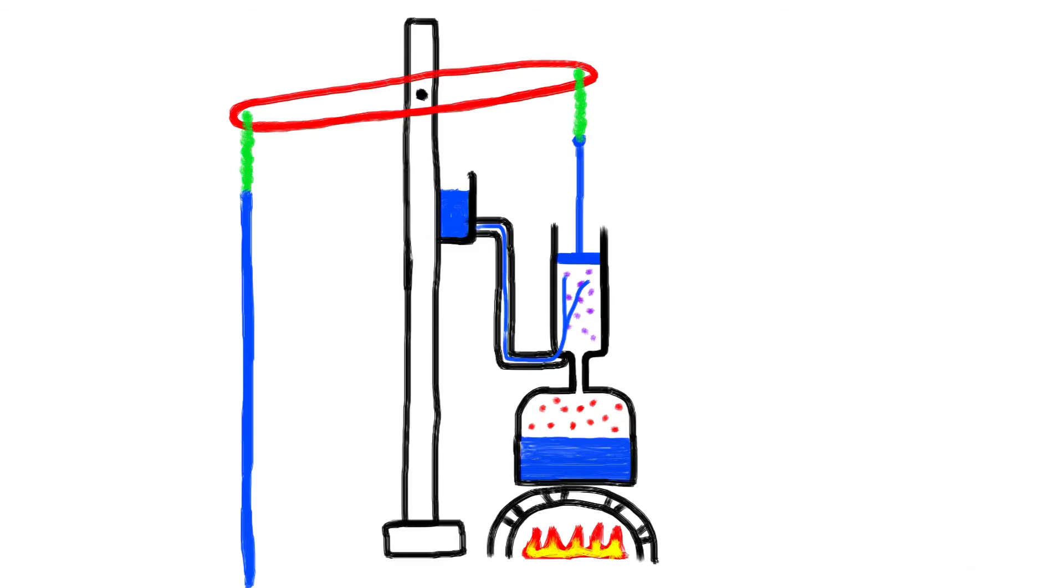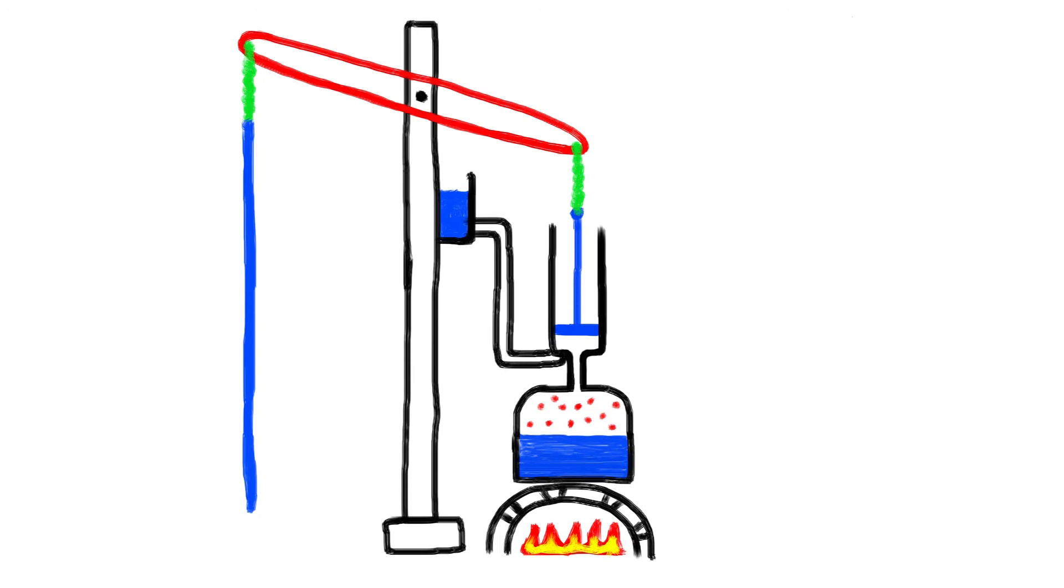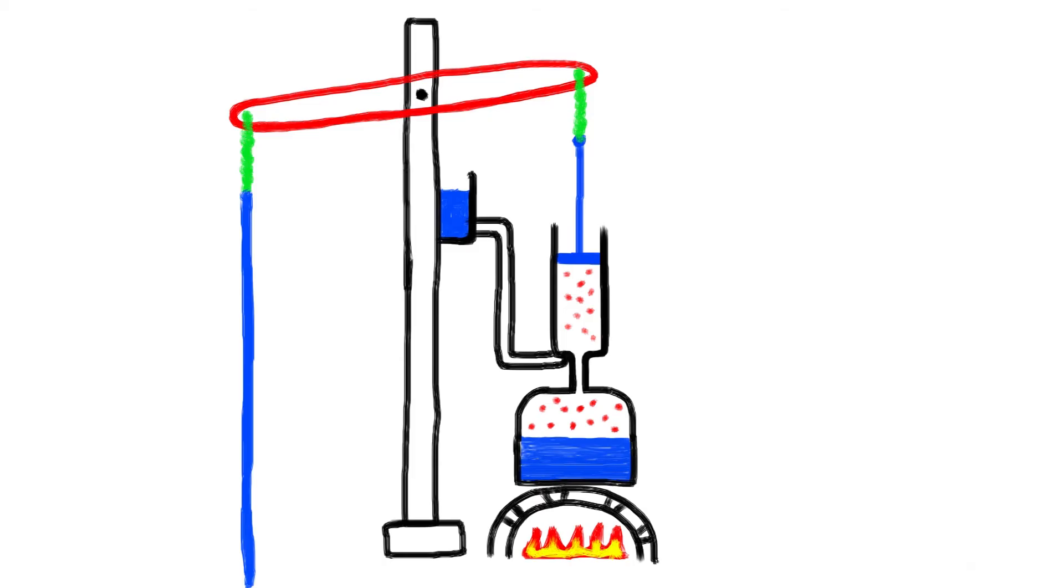The steam will be condensed and the volume would be reduced, creating low pressure. Because the piston is open to atmospheric pressure, the piston would be pushed down under the air pressure. Then the cycle continues - steam would push the piston up, water would be injected to condense the steam, reducing pressure. Atmospheric pressure would push the piston down.